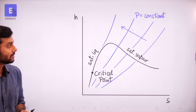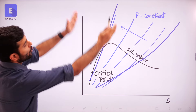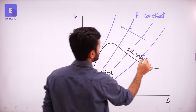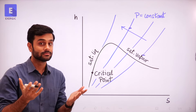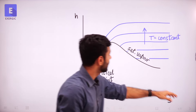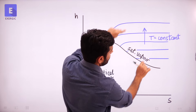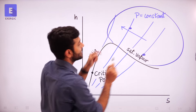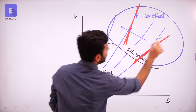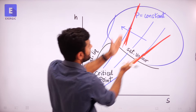What does this tell us about how the constant pressure lines look? You can observe that they are diverging — they are moving away from each other. At one point, temperature will be higher and the slope will be higher; at another point, temperature will be lower and the slope will be lower. This explains why these constant pressure lines are diverging from each other.